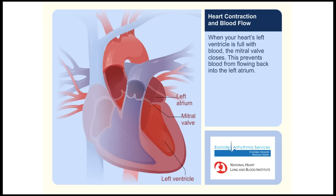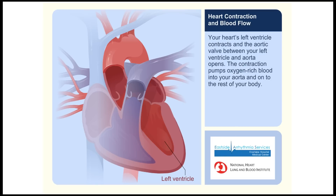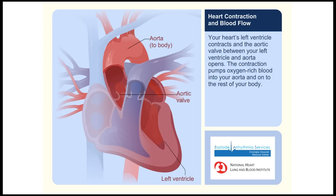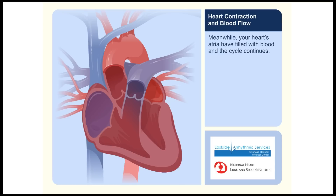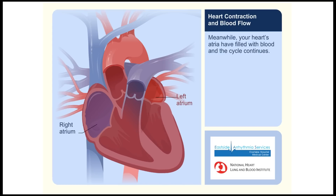When your heart's left ventricle is full with blood, the mitral valve closes to prevent blood from flowing back into the left atrium. Your heart's left ventricle contracts and the aortic valve between the left ventricle and aorta opens, pumping oxygen-rich blood into your aorta and on to the rest of your body. The aortic valve quickly closes to prevent backflow. This occurs at the same time a new contraction is taking place in your heart's right ventricle.